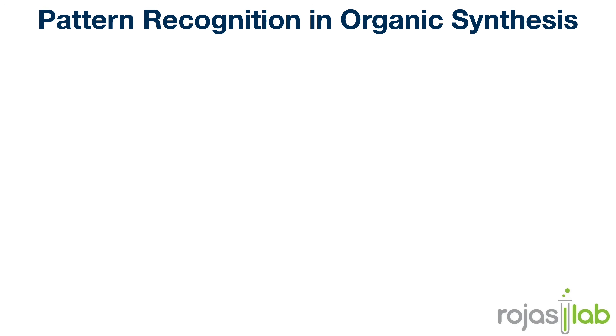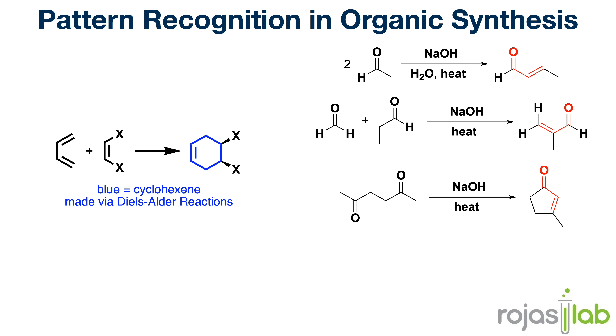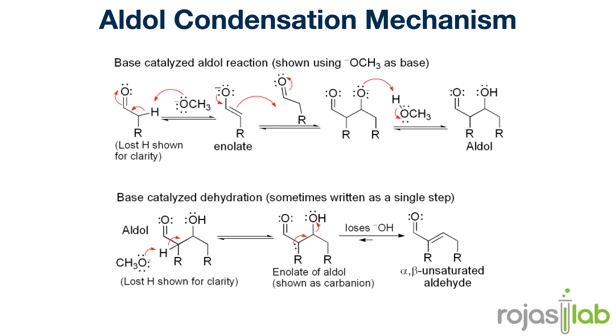Now the fifth step is really more advanced and comes with practice. The fifth trick is pattern recognition. For example, anytime I see a product that contains an alpha-beta unsaturated carbonyl compound, it's likely that this proceeded via an aldol condensation. An aldol condensation is an organic reaction that forms a carbon-carbon bond between two carbonyl compounds, like aldehydes or ketones. This results in a beta-hydroxy carbonyl compound, which then often undergoes dehydration to form an alpha-beta unsaturated carbonyl compound. Being able to identify these patterns helps you predict the synthetic route needed to form your product.